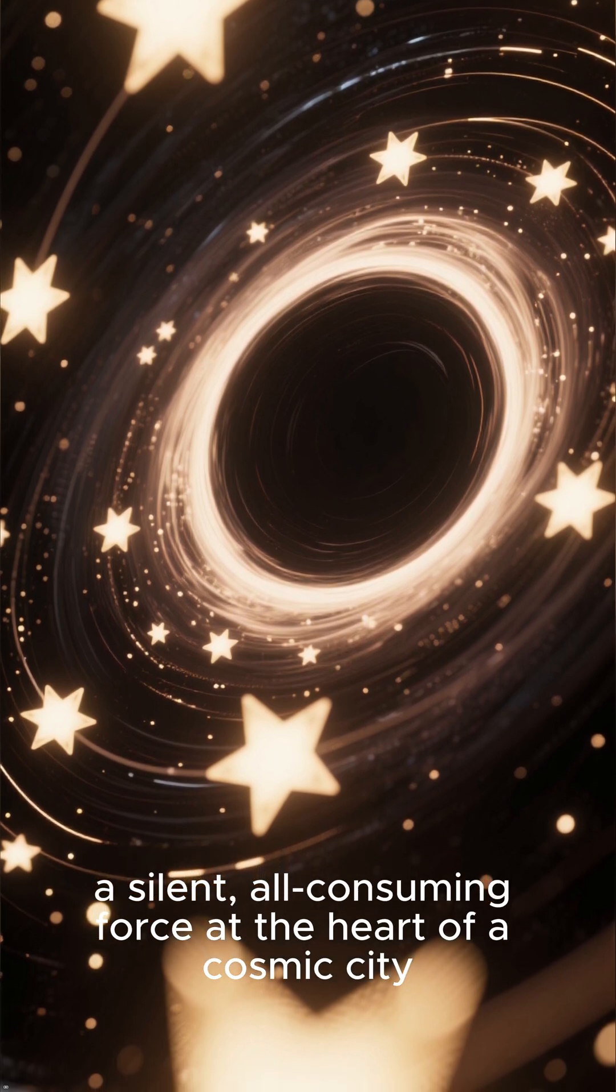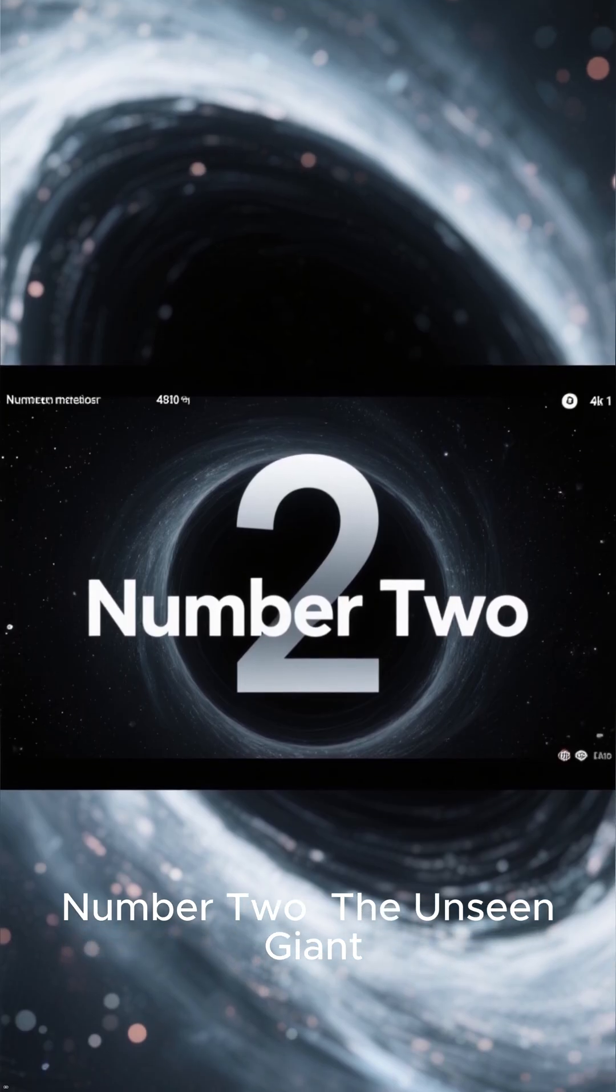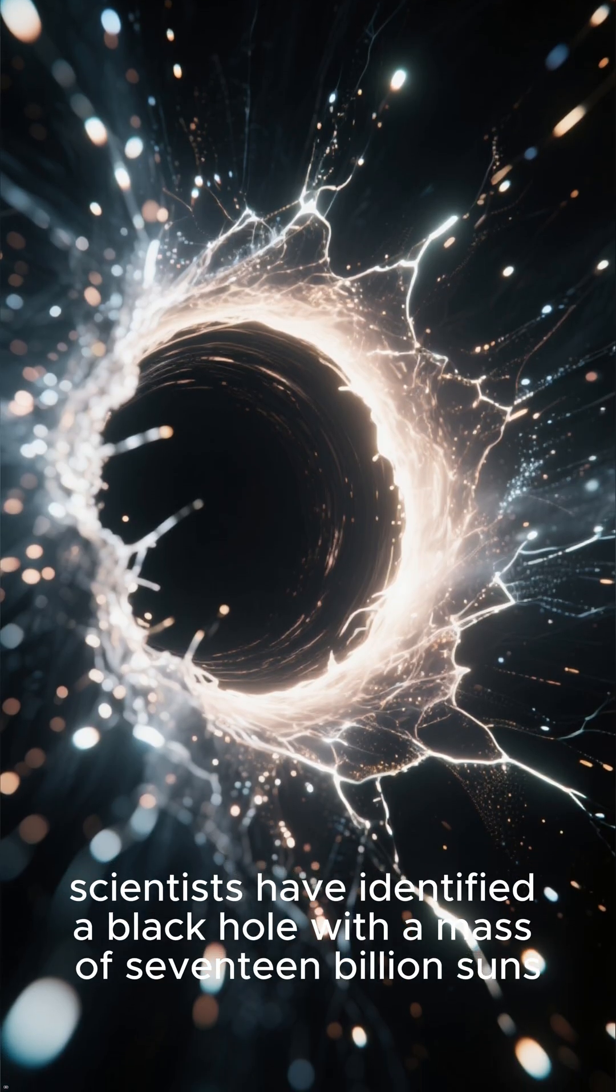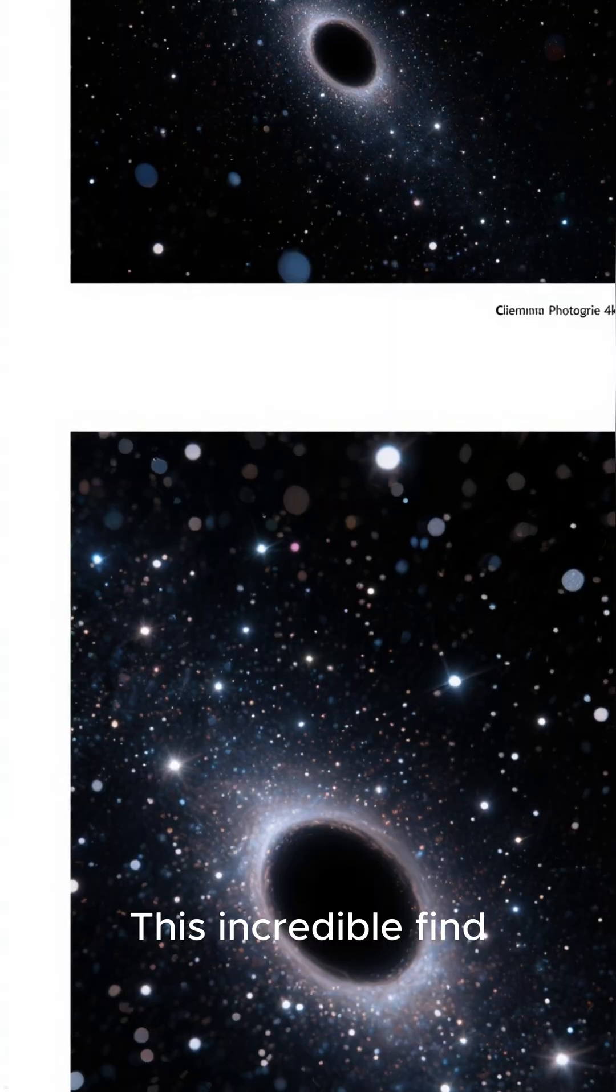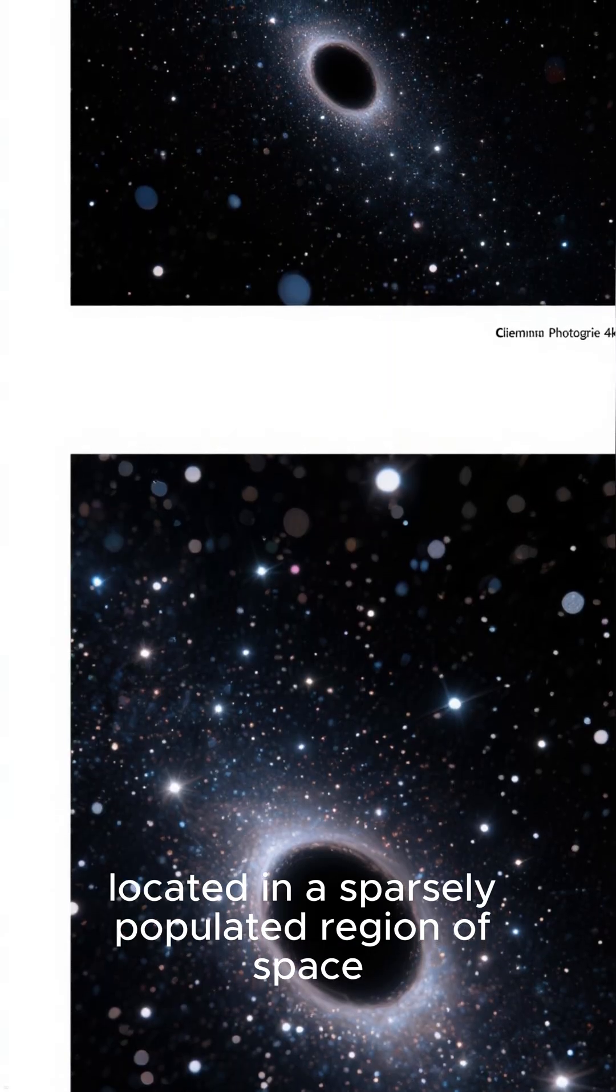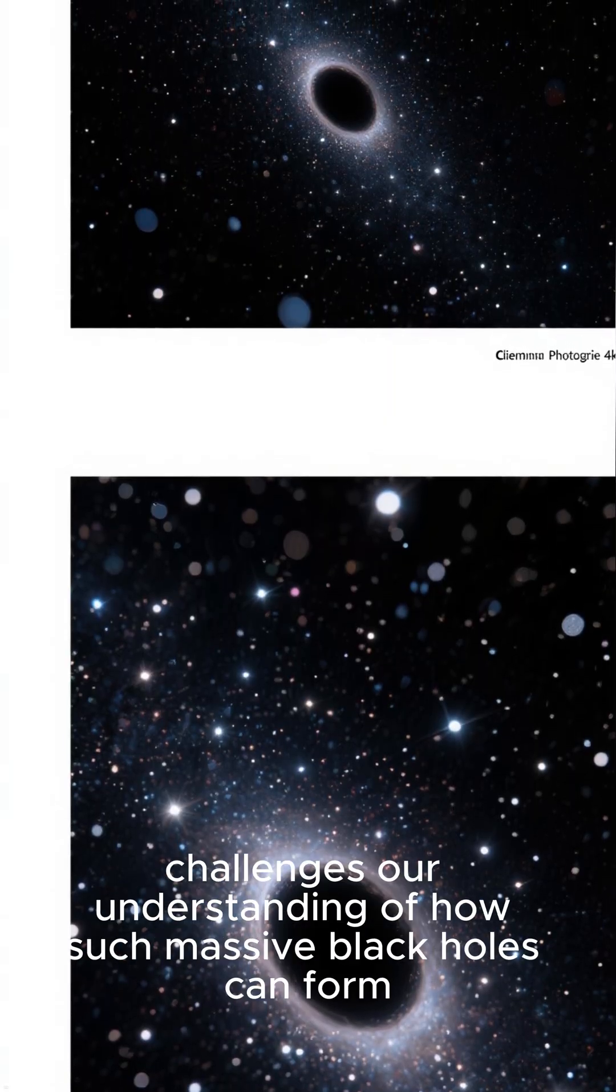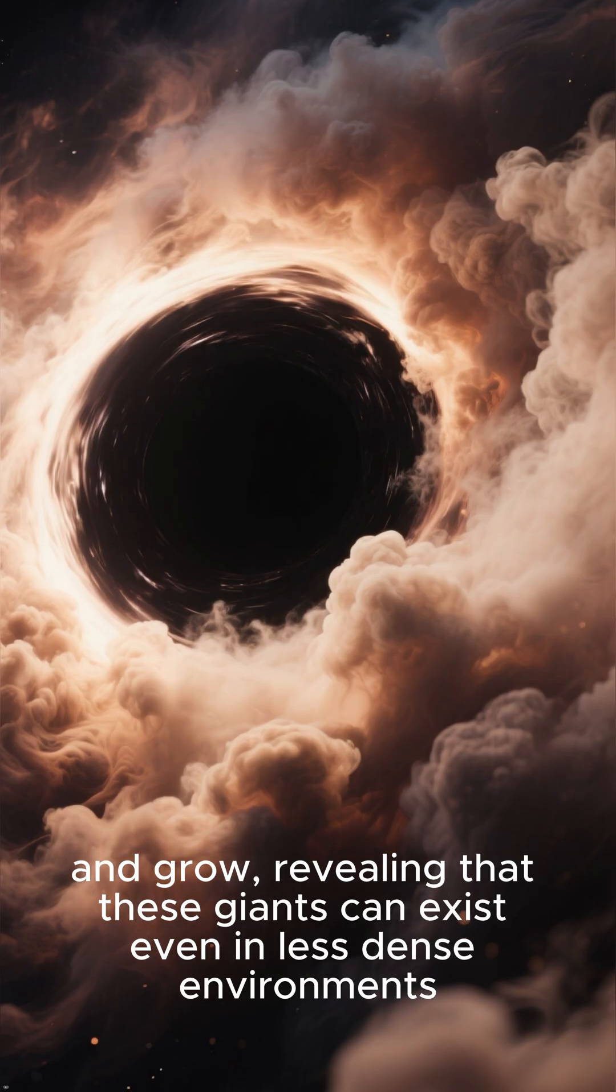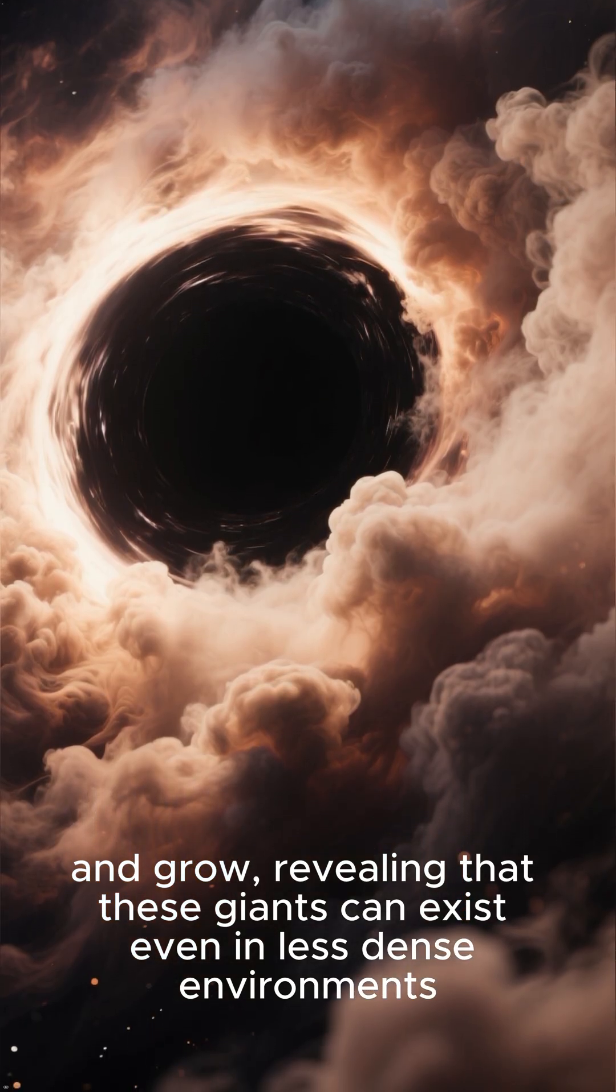Number 2: The Unseen Giant. Pushing the boundaries of discovery, scientists have identified a black hole with a mass of 17 billion suns. This incredible find, located in a sparsely populated region of space, challenges our understanding of how such massive black holes can form and grow, revealing that these giants can exist even in less dense environments.